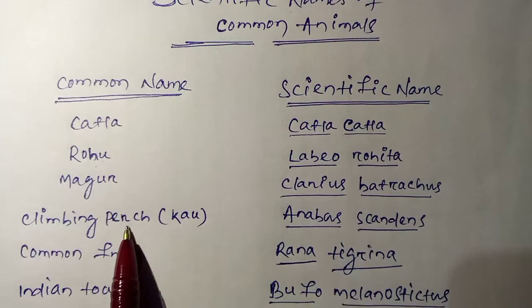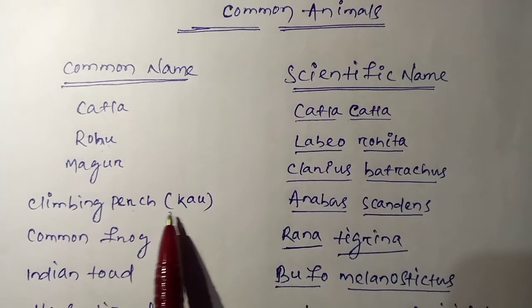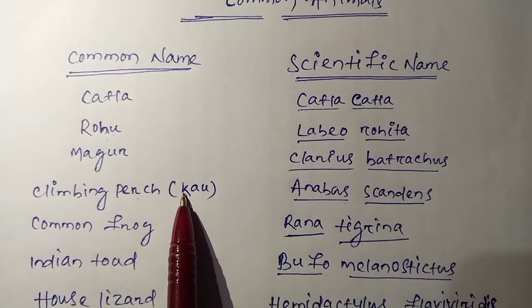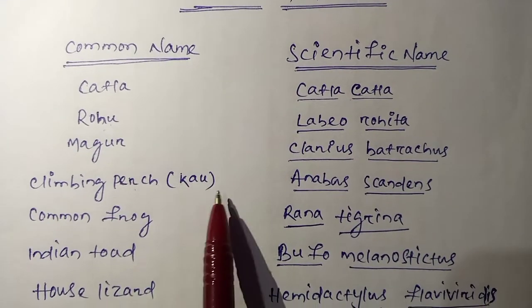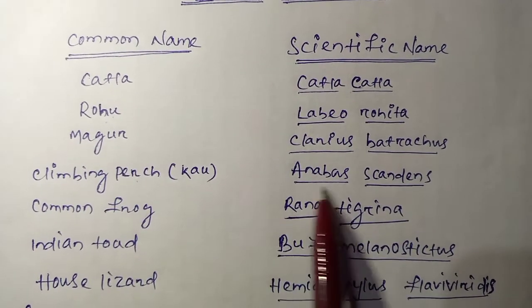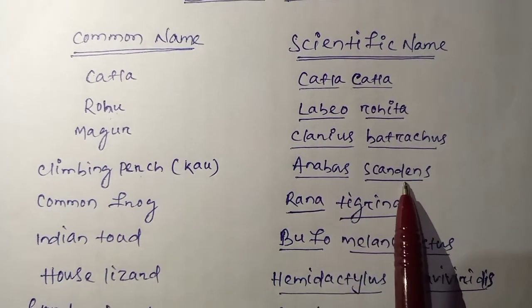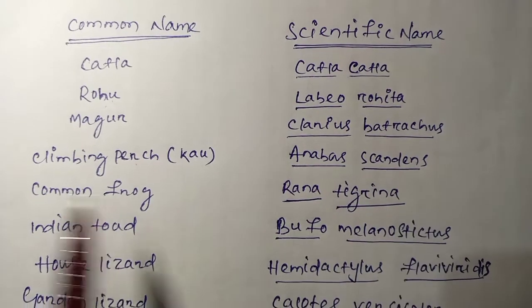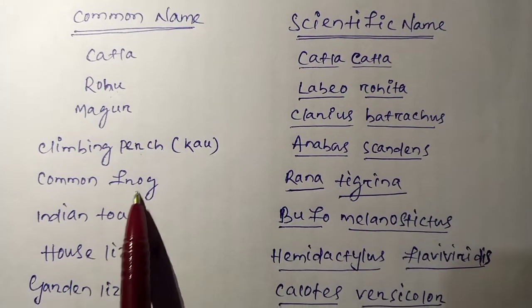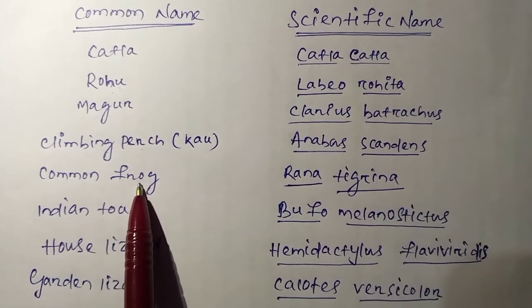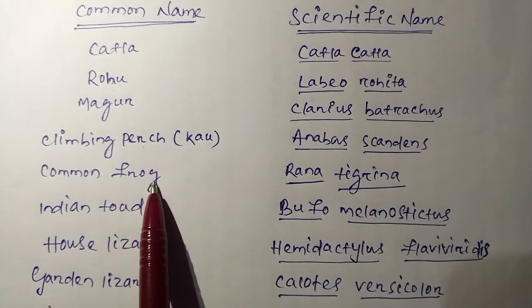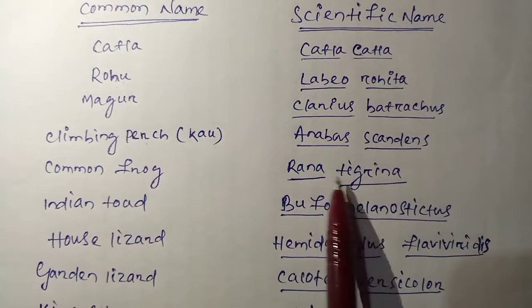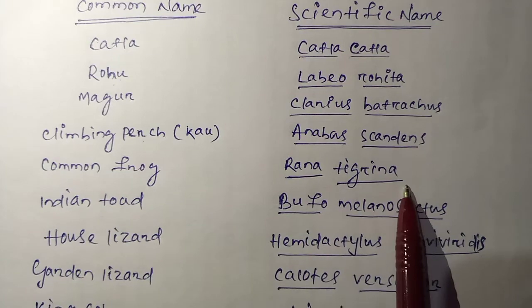Next is Climbing Perch, which is also known as Koi. The zoological name is Anabas scandens. Next is Common Frog. The scientific name is Rana tigrina.